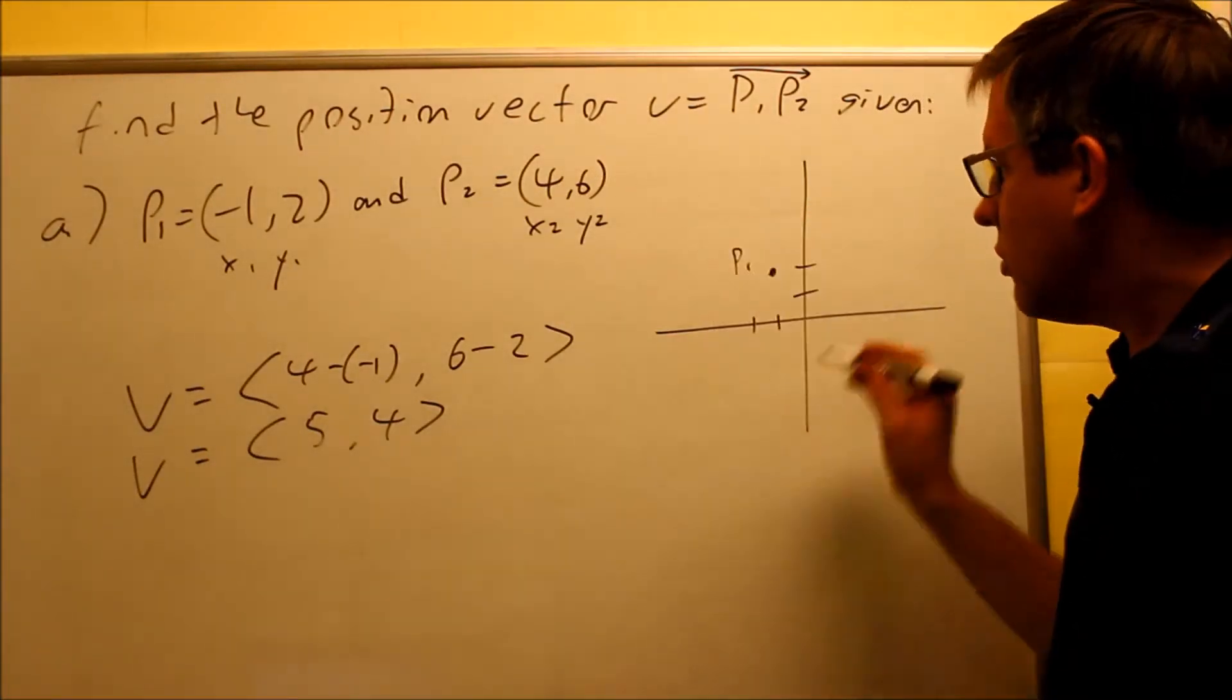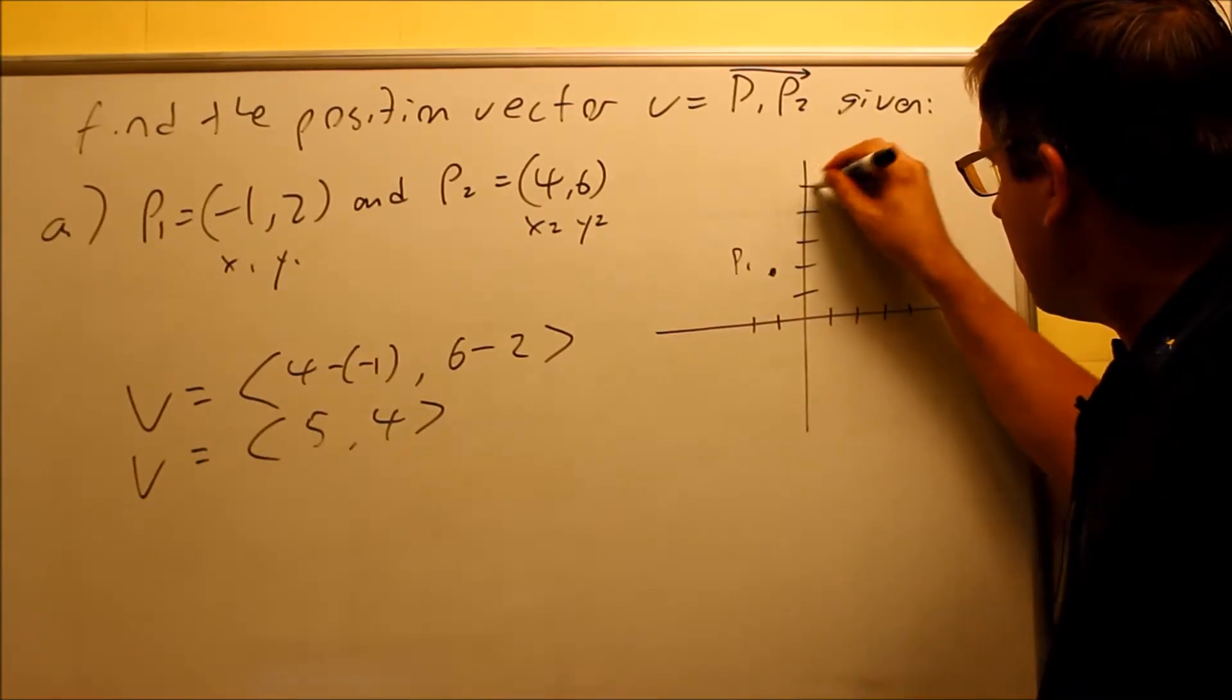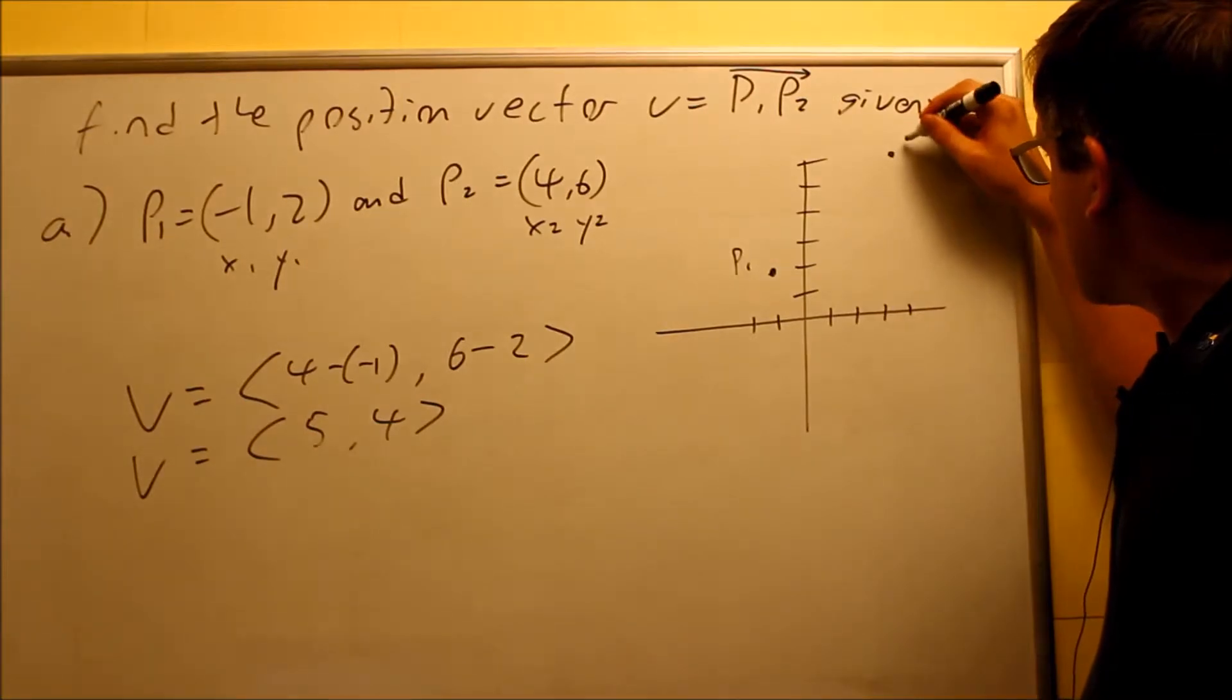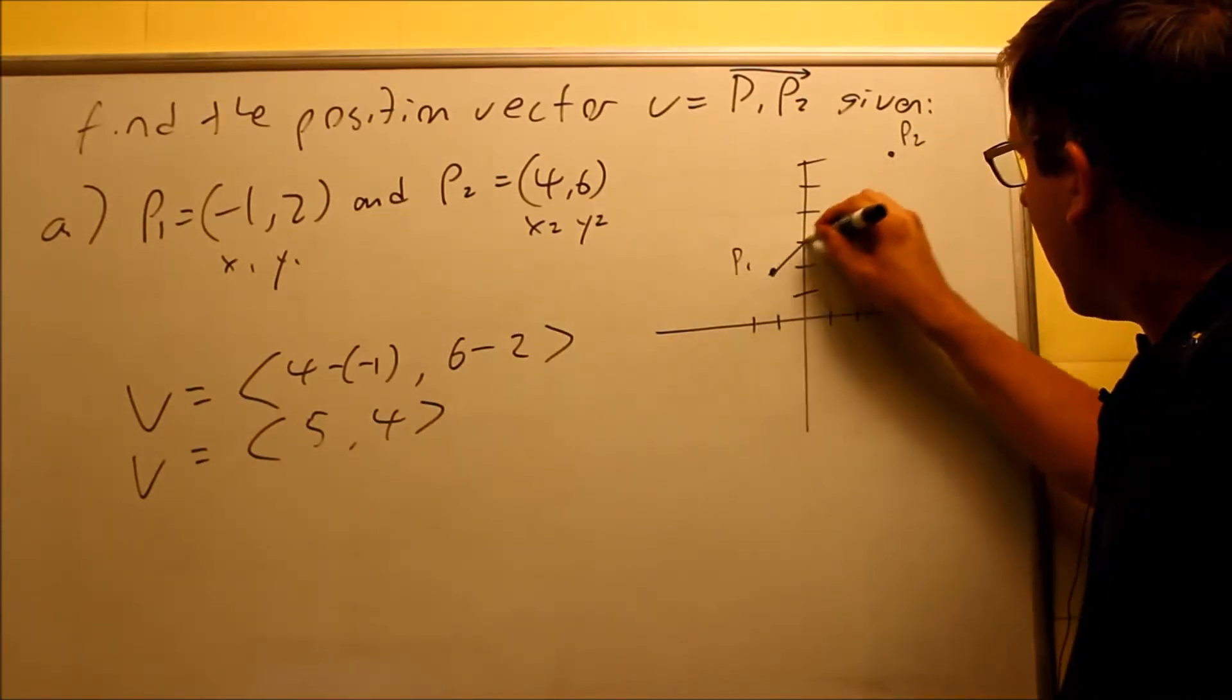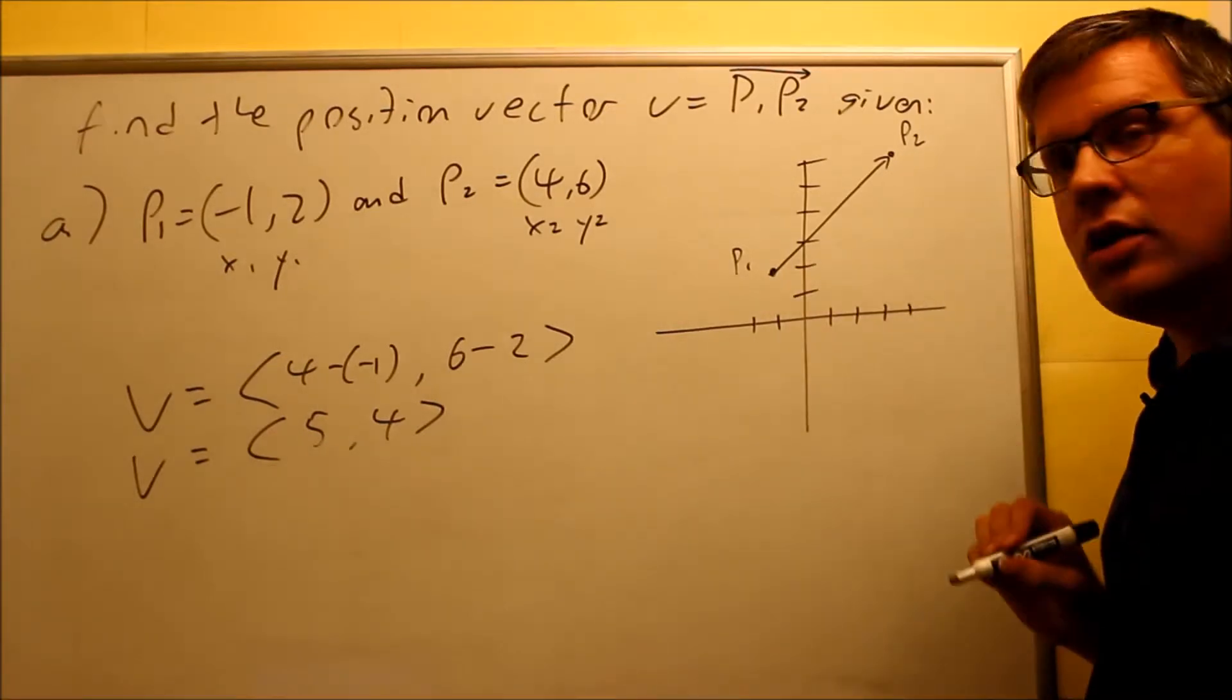My P2 is 4 and 6. And that's going to be right here. That's my P2. And this is what my original vector looked like. It started from P1 and it ended at P2.